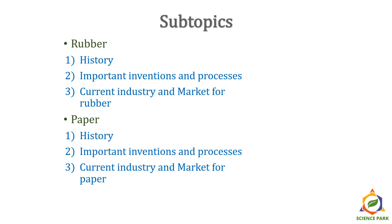The sub-topics for today's video are rubber industry and paper industry. We will follow the same chronology: first the history of rubber, then some important inventions and processes for the rubber industry, and then the current scenario of rubber industry and its market. The same approach applies to paper industry — history of paper making, where and how it started, important inventions and processes, and finally the current industrial status and market for paper industry.